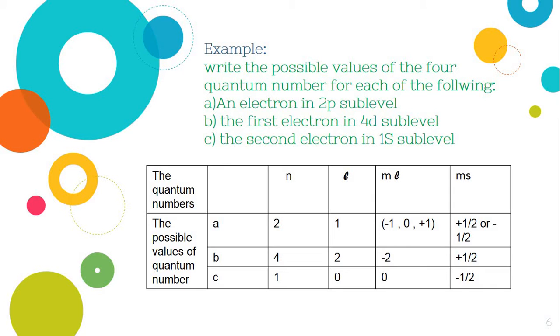Number b, the first electron. Take care of this first electron. So what do you think about its ms, will it be positive or negative? The first electron will be positive. In the 4d sublevel. So its n will be equal to 4. And its ℓ of the d sublevel is equal to 2. And its mℓ will be negative 2.